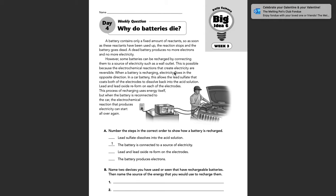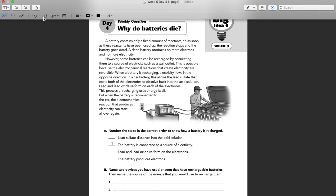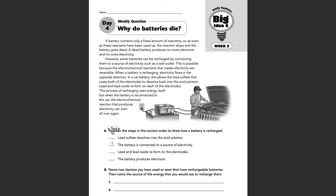If we look in the second paragraph, it says because electrochemical reactions are reversible, when a battery is recharging, electricity flows in the opposite direction. In a car battery, this allows lead sulfate that coats both of the electrodes to dissolve back into the acid solution. So lead sulfate dissolves into the acid solution — that would be our second step. Then after that, it says the lead and lead oxide reform on each of the electrodes — that would be our third step.